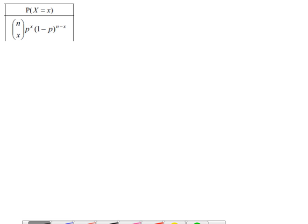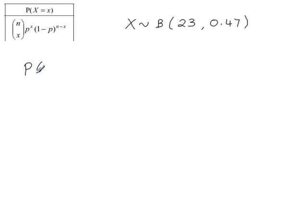Let's say we have a binomial probability distribution where the number of trials is 23 and the probability of success is 0.47 or 47%. We're looking for the probability that in 23 trials you have exactly 12 successes.